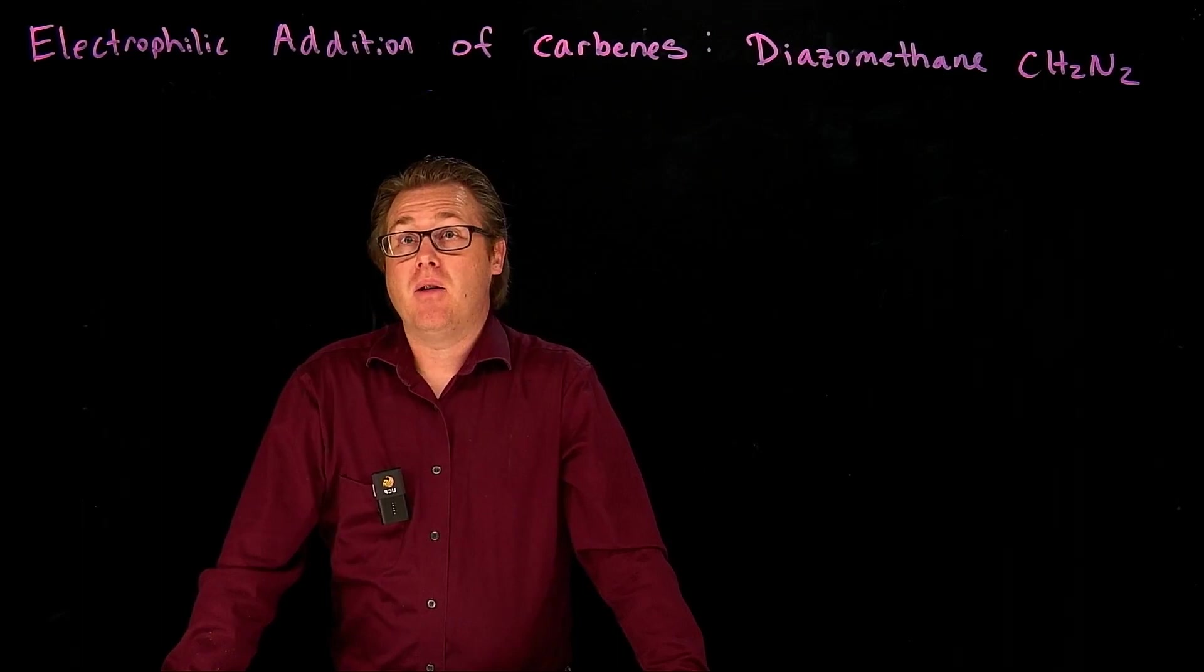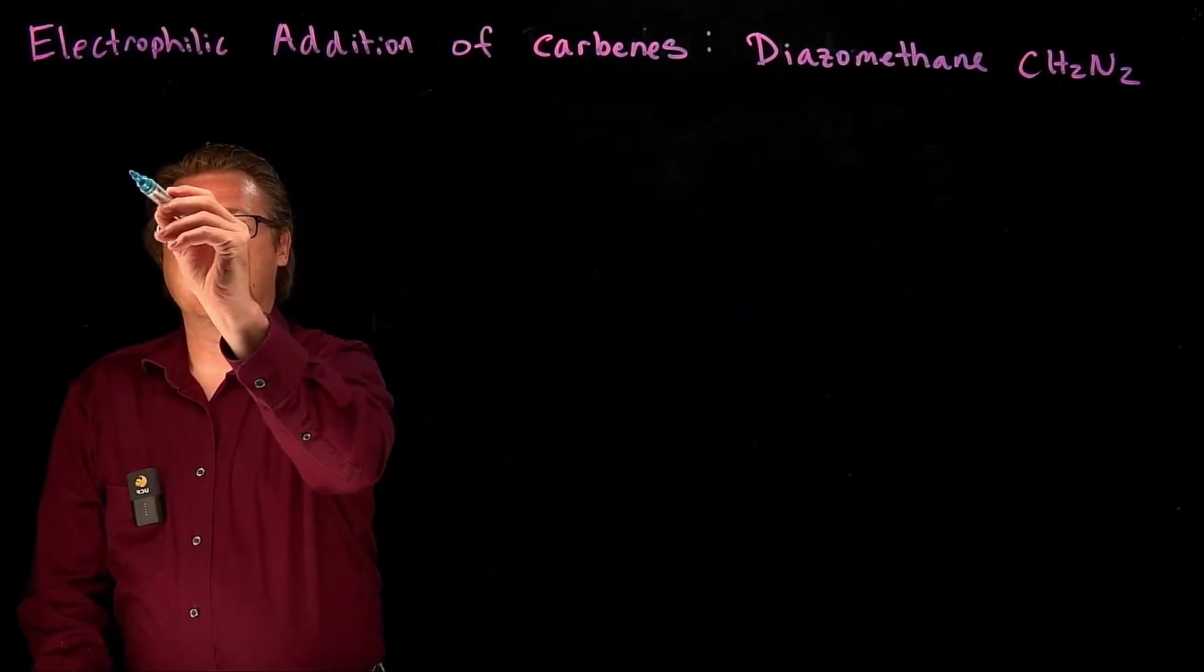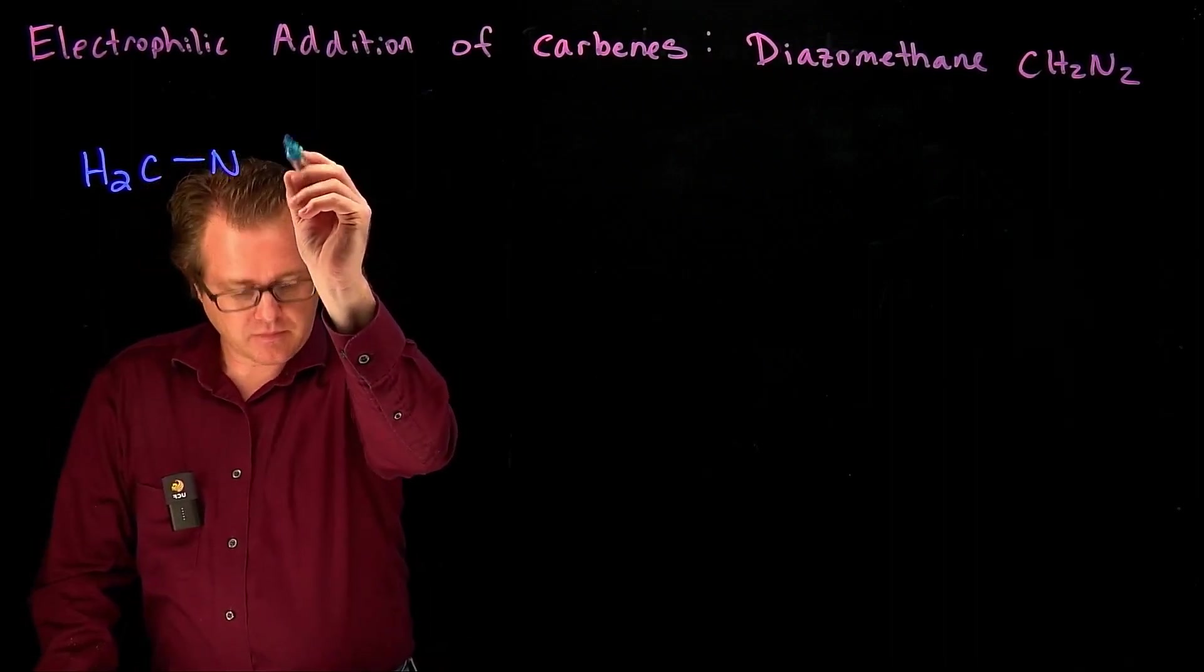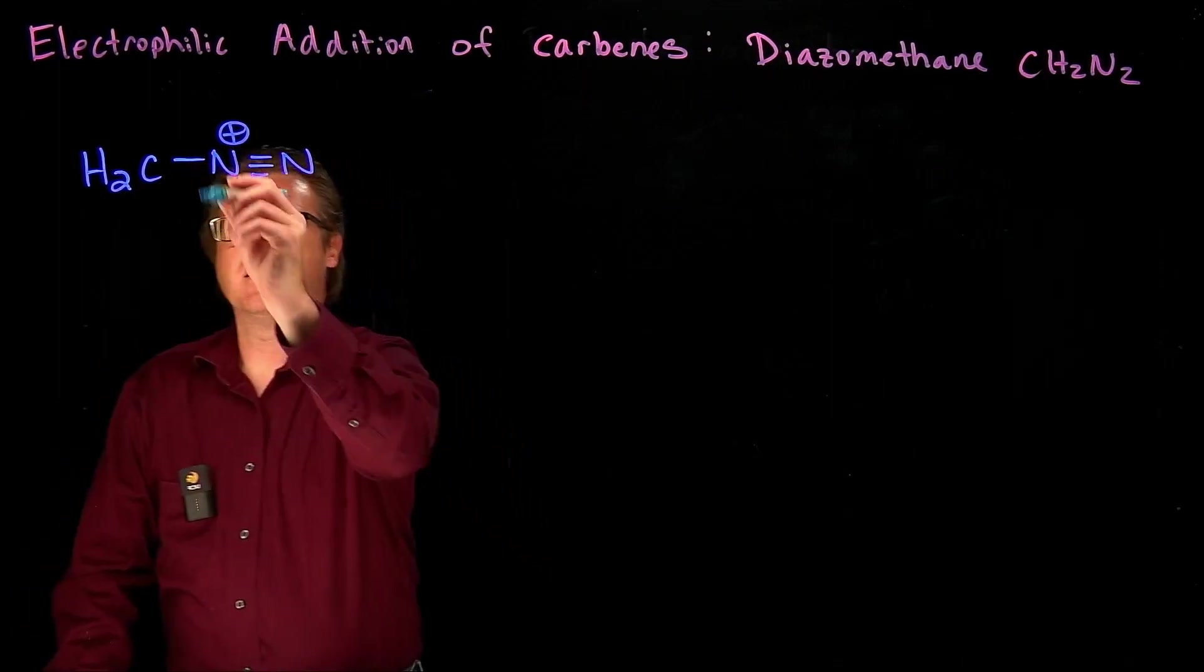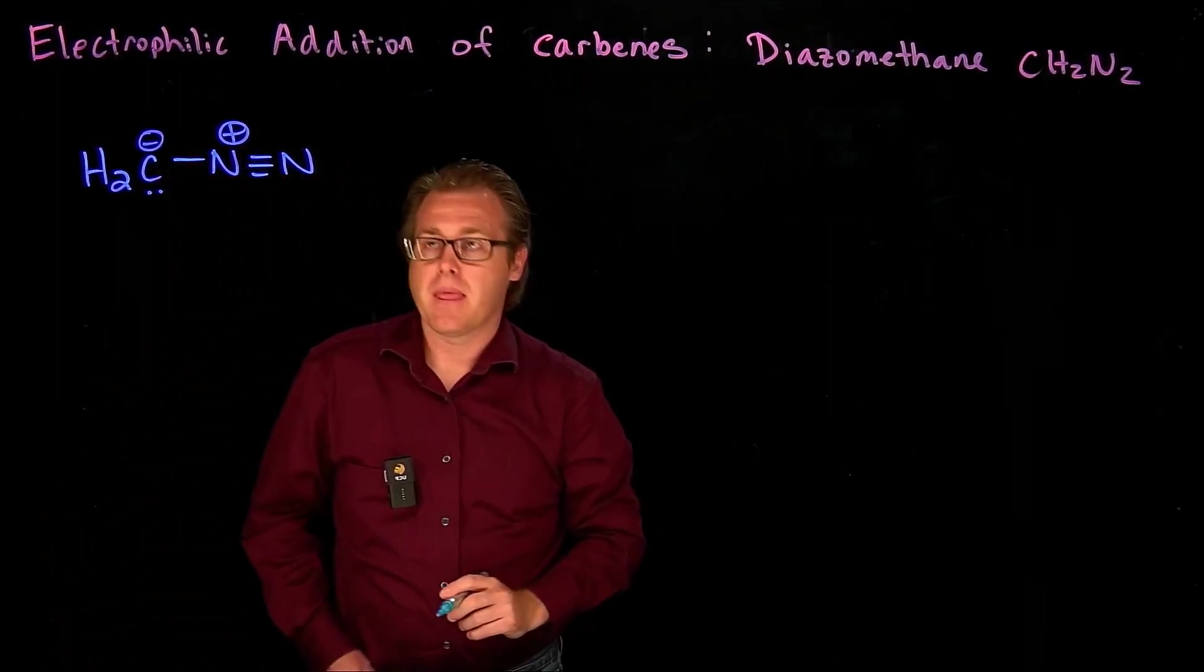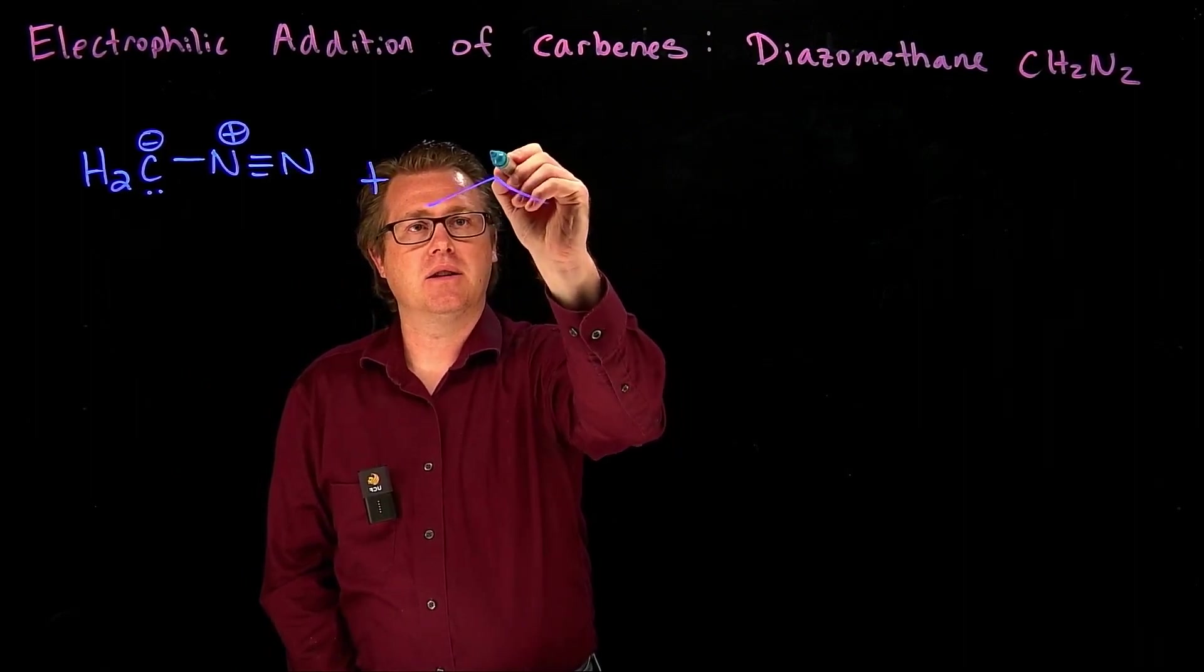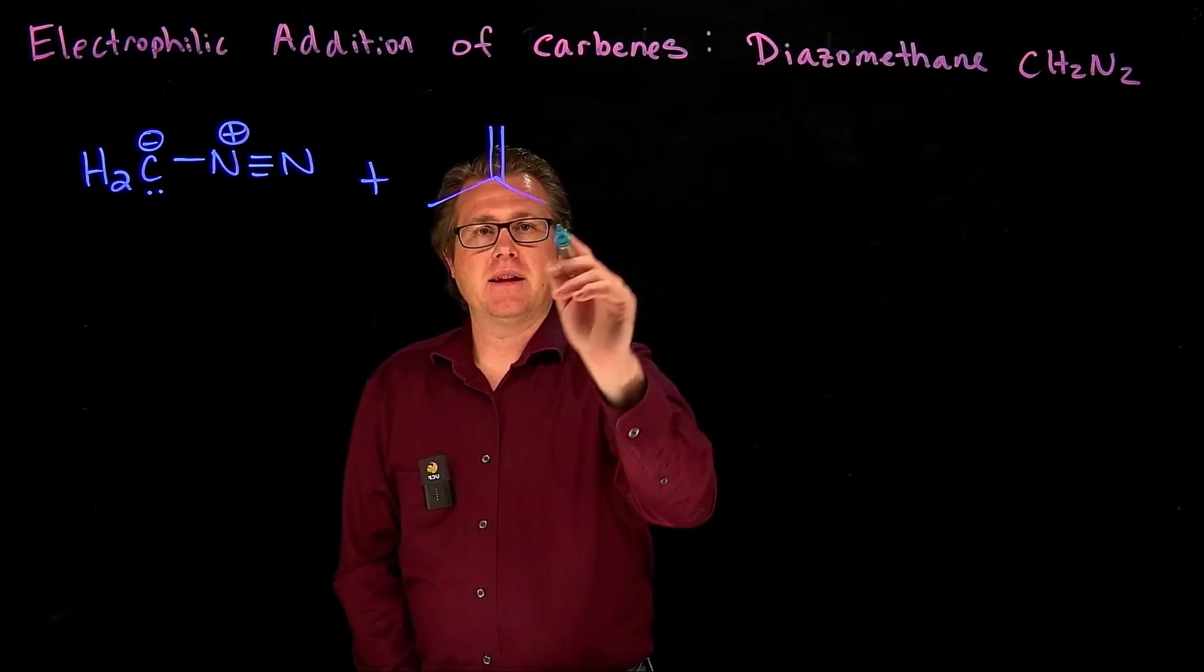But now, we can take this diazomethane, let's represent it like this, let's draw out its Lewis structure here, like that, and I give it a charge like so. Now, if we take diazomethane and we treat it with an alkene, so let's give ourselves, let's draw an alkene that looks like this. And we treat it with diazomethane.